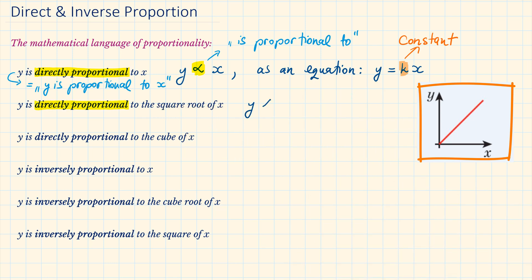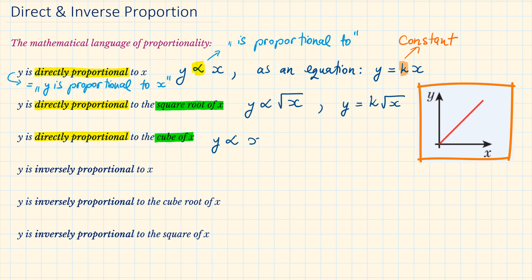Y is directly proportional to the square root of X. Again, we use the symbol of proportionality and instead of X we write square root of X. Writing this as an equation, we swap the symbol of proportionality with equal and K times, so we have Y equals K times square root of X. Y is directly proportional to the cube of X — make sure we write X cubed here. As an equation, this is Y equals K times X cubed.